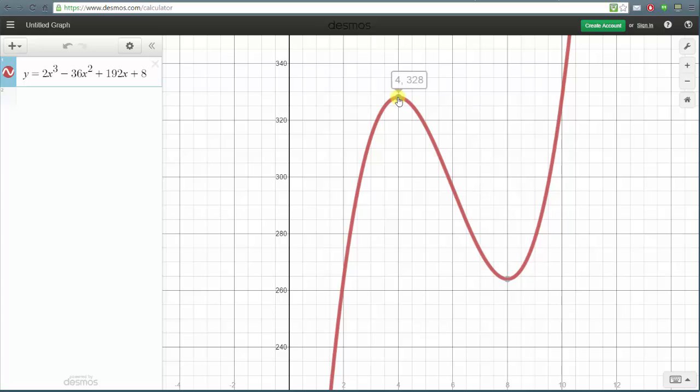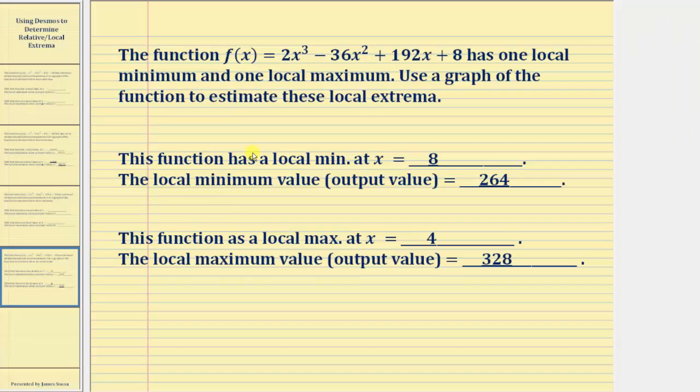Let's go back and record this information. Again we now know the function has a local minimum at x equals 8, and the local minimum value or output value is 264. The function has a local max at x equals 4, and the local maximum value is 328.